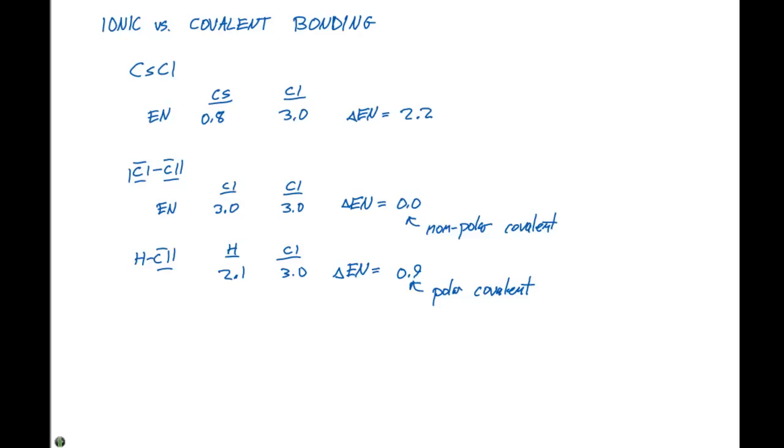So we can set up a continuum between our ionic and non-polar covalent bonds. On the left hand side, we'll say our bonds are ionic. On the right hand side, they're covalent. In the middle we'll say is polar covalent, and on the right we have our non-polar covalent.